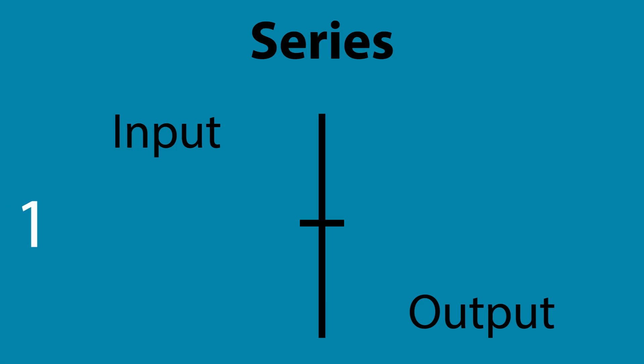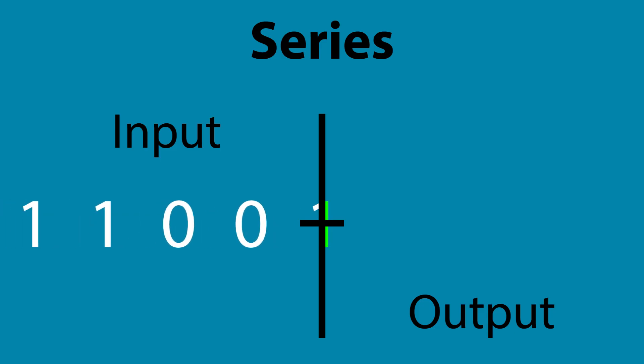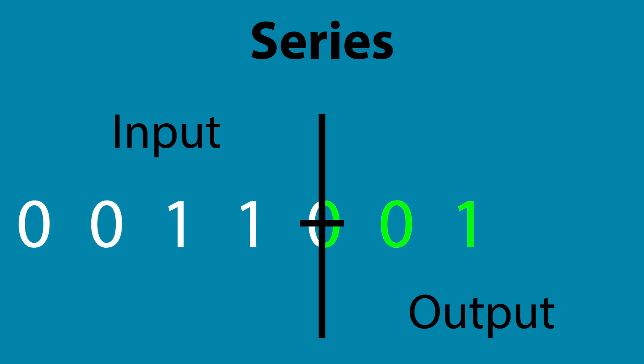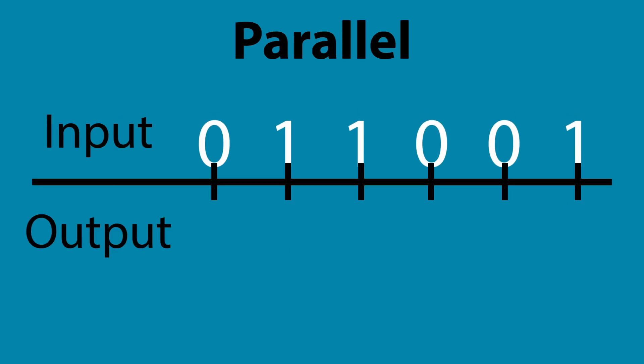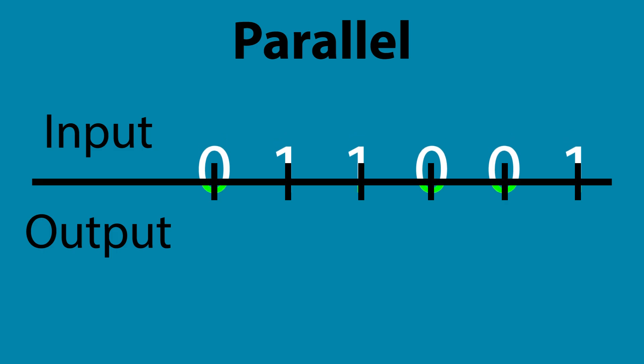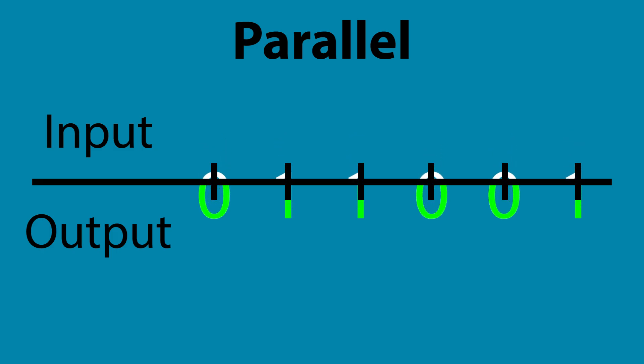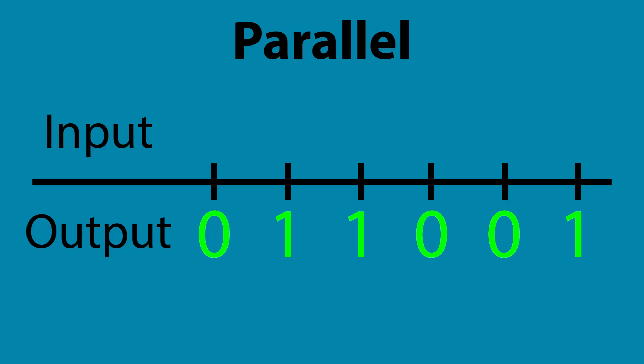I keep saying serial and parallel — let's make sure you understand what that means. In series, bits — the ones and zeros, or high and low signals — are processed one at a time, in order, requiring only one input or output. In parallel, a set number of bits of data can be processed all at once, but this requires multiple inputs or outputs, one per bit of data.